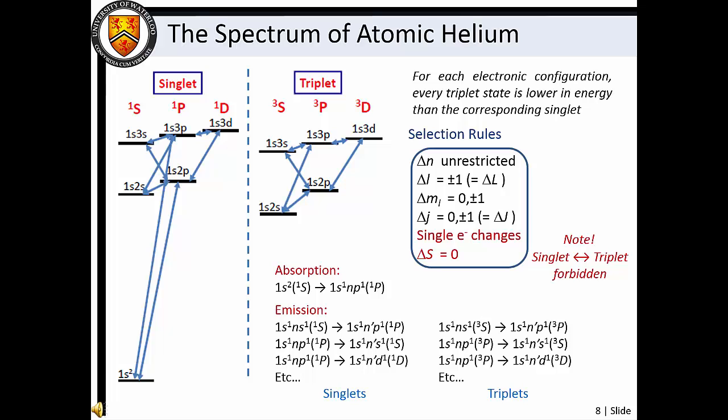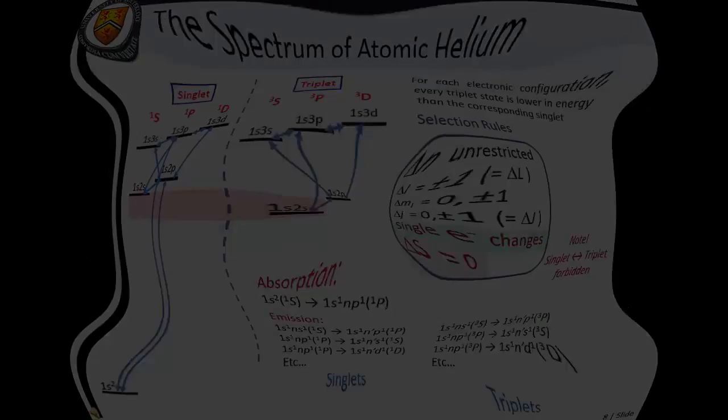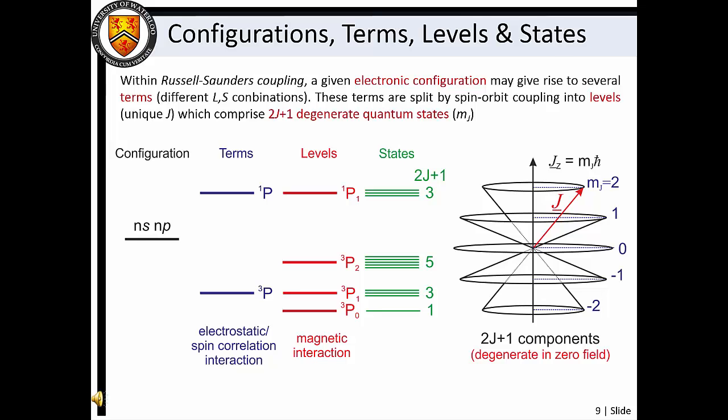As a result of electron correlation, the excited triplet terms of the helium atom are at a slightly lower energy than the excited singlet terms. Consequently, we observe an emission spectrum associated with the singlet states and a different emission spectrum for the triplet states. These transitions obey the same selection rules as those of the hydrogen atom. However, owing to the multi-electron nature of helium, we also find two new selection rules: the electronic configuration can only change by the excitation or relaxation of a single electron, and transitions can only occur between terms with the same multiplicity.